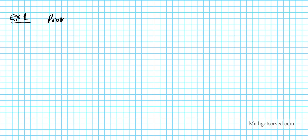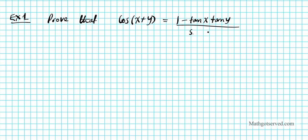Let's go ahead and take a look at example one. We're going to prove that cosine of x plus y is equal to 1 minus tan x tan y, all over secant x secant y. The strategy here is to express everything in terms of the parent functions sine and cosine, then simplify the side that's most complicated.